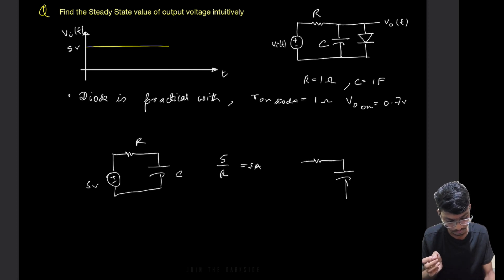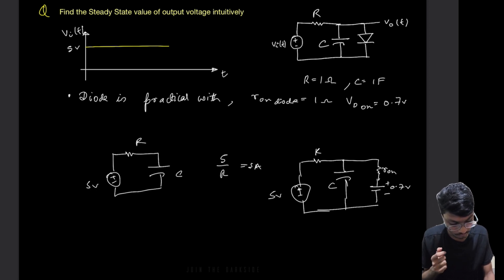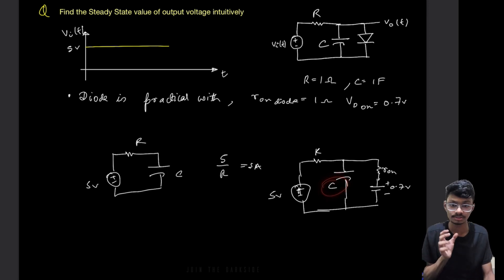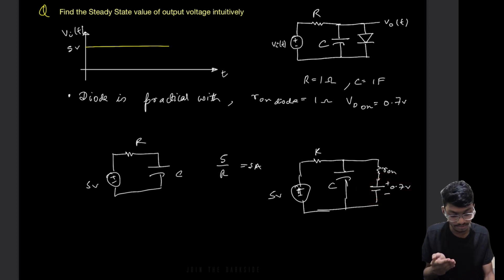The circuit now looks like: capacitor in parallel with the diode branch (Ron and 0.7V cut-in voltage), with R and the 5V source. Initially when the cap just reaches 0.7V, the current through the diode branch is just zero, so the drop across Ron is zero, and the diode has exactly the cut-in voltage of 0.7V.